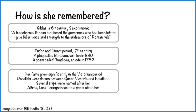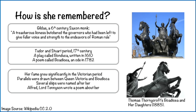Her fame grew significantly in the Victorian period. Parallels — that means comparisons and similarities — were drawn between Queen Victoria and Boudicca. Several ships were named after her, and Alfred Lord Tennyson wrote a poem about her. There is also a statue that you can still see in London today, by Thomas Thornycroft, of Boudicca and her daughters, which was designed and made in the late Victorian period and put on public display afterwards. So she's definitely been remembered, and in the Victorian period that real growth in positivity began.